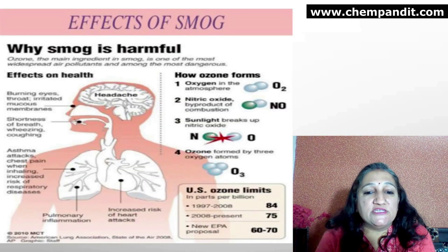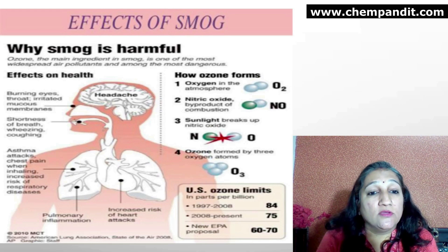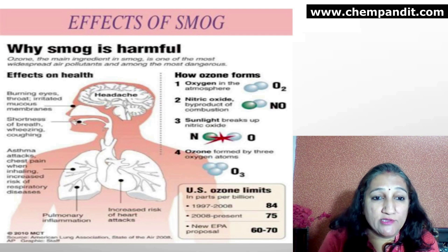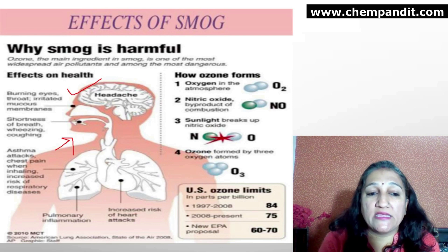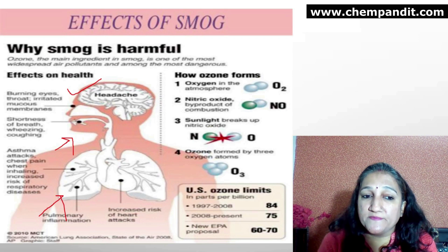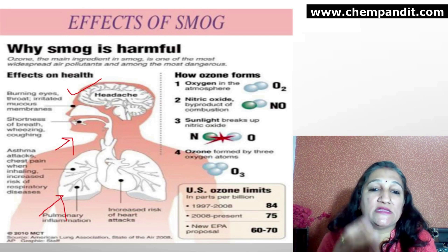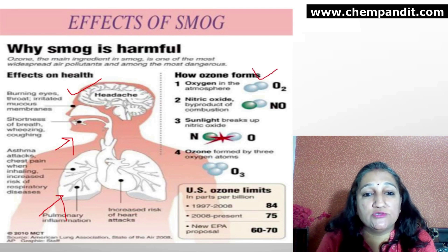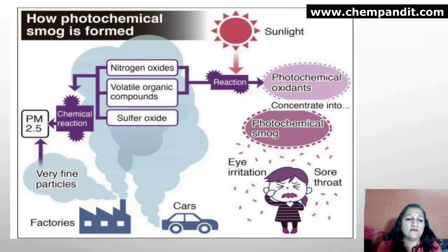This is a graphical representation of smog formation, showing US ozone limits. Why is smog harmful? It causes burning of the eyes, burning of the throat, irritation of mucous membranes, shortness of breath, wheezing, and coughing. It can cause chest pain. When inhaled in high concentrations, there are serious respiratory diseases. Here you can see how ozone and nitric oxide are formed. Factories produce particles and cars produce primary pollutants: nitrogen oxide, VOC, and sulphur oxide.